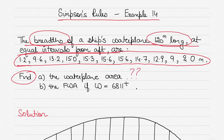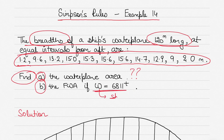What do you have to find? You have to find the water plane area and the fresh water allowance, given that the displacement (W) is 6811 tons. W stands for ship's displacement — if you've been working on ship stability you'll know this already.